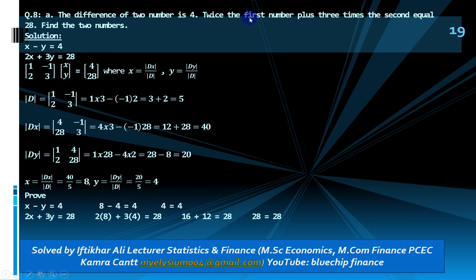Question 8: the difference of two numbers is 4; twice the first number plus three times the second equals 28. Assume first number is x and second is y. So x − y = 4 is the first equation, and 2x + 3y = 28 is the second. I will apply Cramer's rule. The coefficient matrix is [1 −1; 2 3].